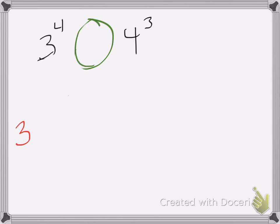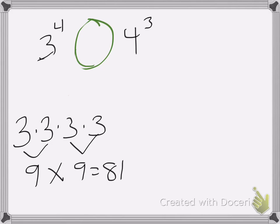So 3 to the 4th power is the same as 3 times 3 times 3 times 3. Remember do not do 3 times 4, that's wrong. We need to multiply 3 by itself 4 times. So 3 times 3 is 9, and 3 times 3 is 9, so we're going to multiply those together and we get 81. So 3 to the 4th power is equal to 81.